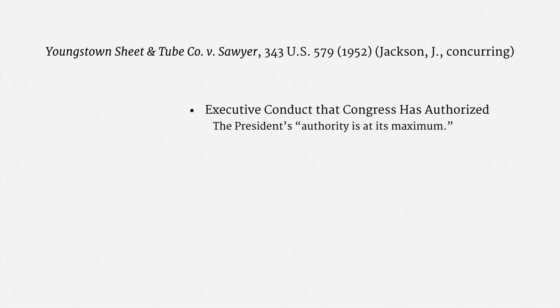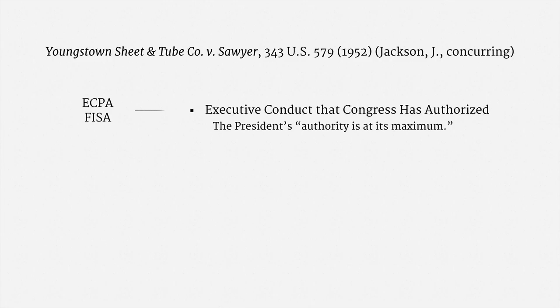There are three categories in Justice Jackson's framework. The first relates to executive conduct that Congress has authorized. In that category, the President's authority is at its maximum. If some conduct is unlawful, it's really only because the federal government entirely lacks constitutional power for that conduct. Everything we've seen so far with the Electronic Communications Privacy Act and the Foreign Intelligence Surveillance Act falls into this category.